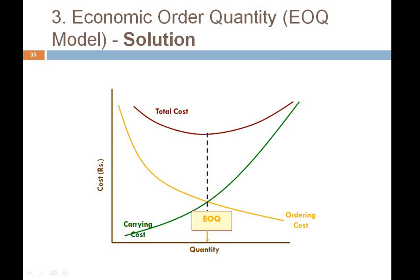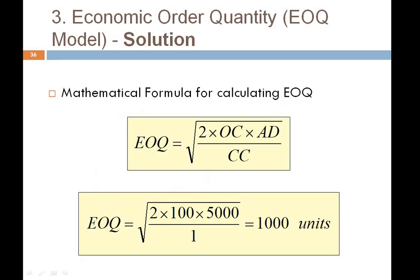Now we apply the EOQ formula: EOQ = √(2 × OC × D / C), where OC is the ordering cost per order, D is the annual demand, and C is the carrying cost per unit. Using our example: EOQ = √(2 × 100 × 5000 / 1) = √1,000,000 = 1000 units. This confirms the optimum order quantity of 1000 units derived from the logical analysis.